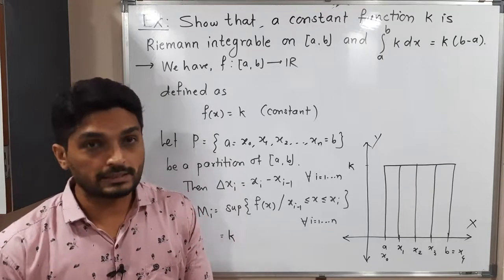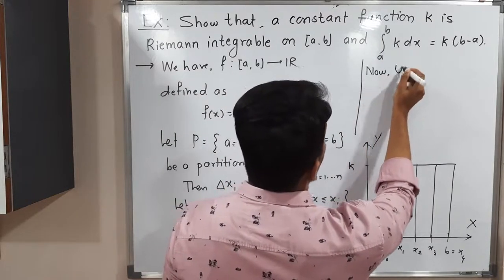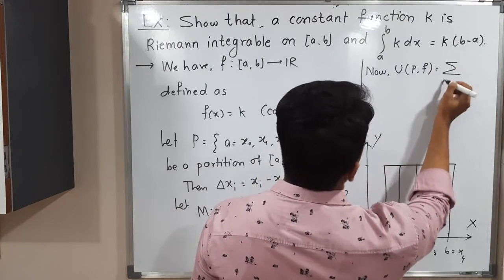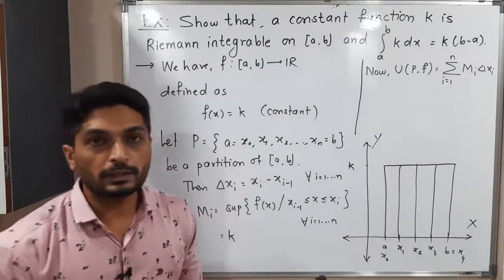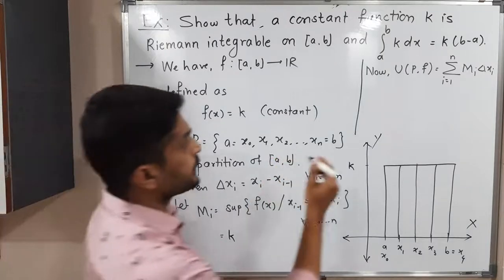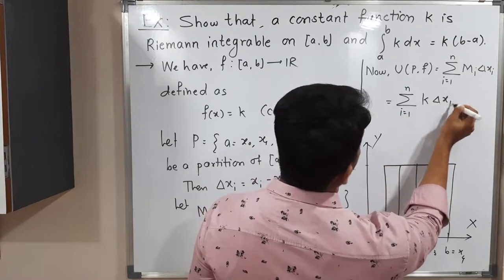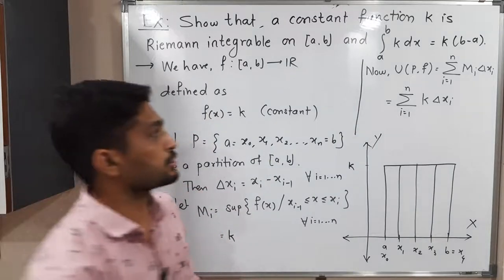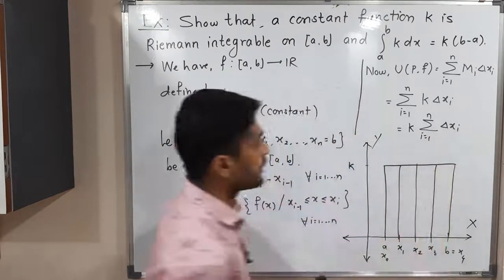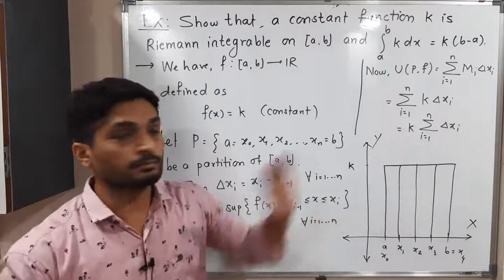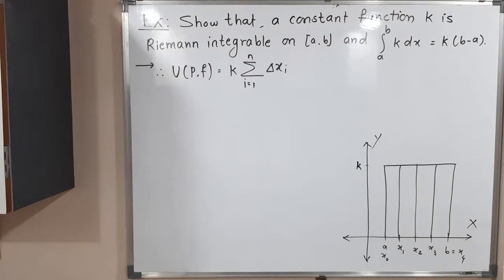After that, we go for the upper sum U(P, f). Its formula is U(P, f) = Σᵢ₌₁ⁿ Mᵢ Δxᵢ. Substituting the value of Mᵢ = k, we get Σᵢ₌₁ⁿ k Δxᵢ. Since k is a constant, we can take it outside the summation: k · Σᵢ₌₁ⁿ Δxᵢ. Now let us expand that summation.